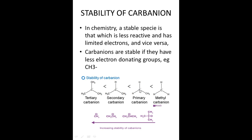So primary carbanions are more stable than tertiary and secondary. As you increase the number of methyl groups on the carbanion, you tend to decrease stability. As you decrease the number of carbons around the central carbanion carbon, you increase stability. So if it is more stable, it means it has fewer electron-donating groups.